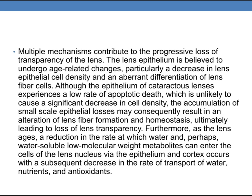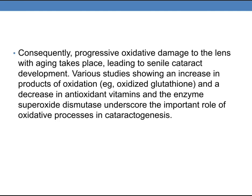Multiple mechanisms contribute to the progressive loss of transparency of the lens. The lens epithelium undergoes age-related changes, particularly a decrease in lens epithelial cell density and aberrant differentiation of lens fiber cells. Although the epithelium of cataractous lenses experiences a low rate of apoptotic death, the accumulation of small-scale epithelial losses may result in an alteration of lens fiber formation and homeostasis, ultimately leading to loss of lens transparency. Furthermore, as the lens ages, there is a reduction in the rate at which water and water-soluble low-molecular-weight metabolites can enter the lens nucleus, with a subsequent decrease in the transport of water, nutrients, and antioxidants, leading to progressive oxidative damage and senile cataract development.